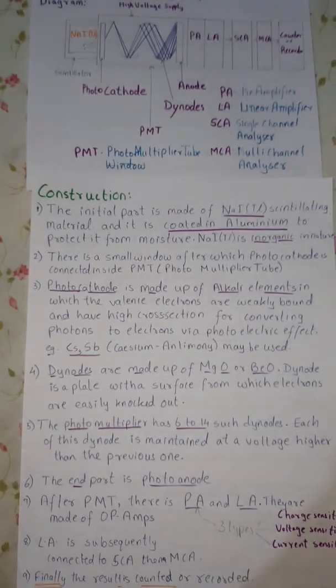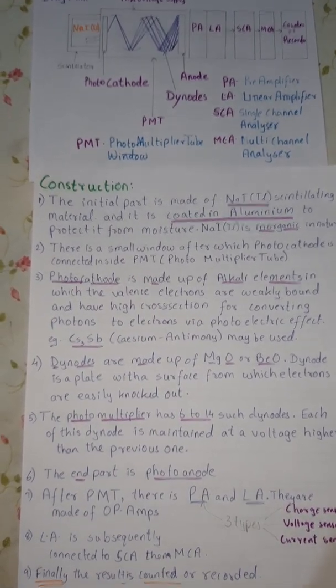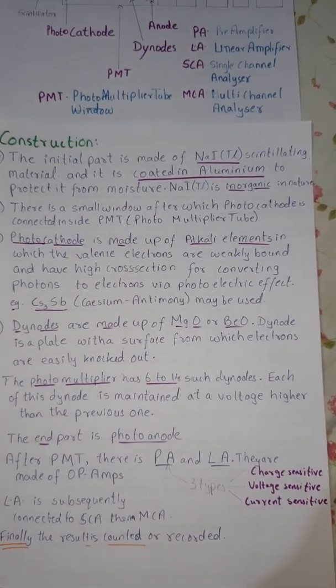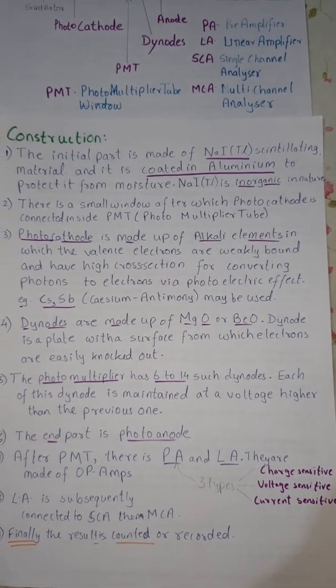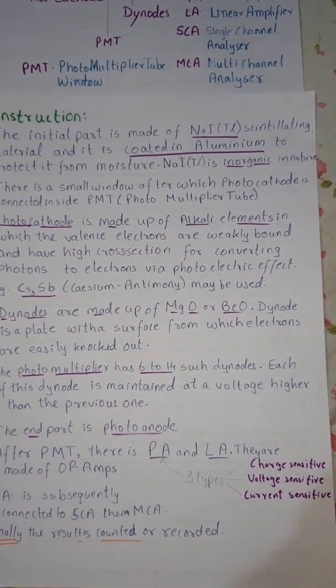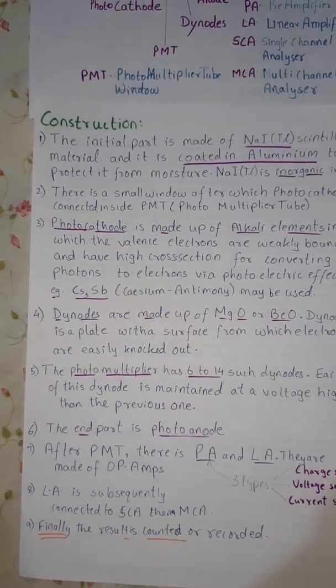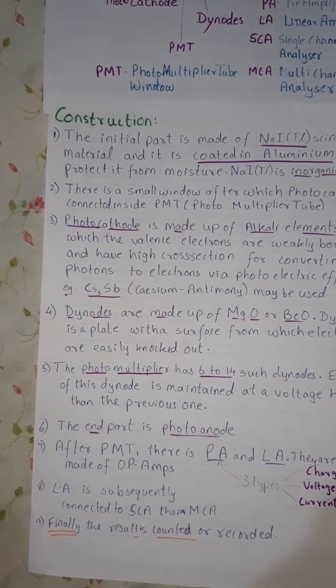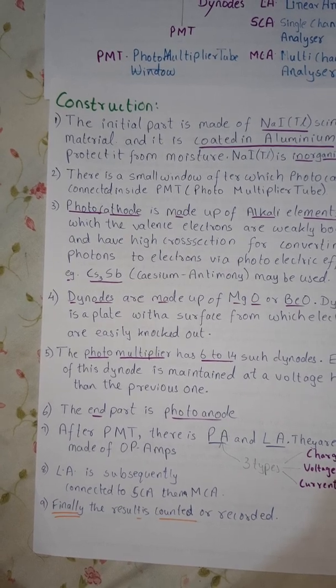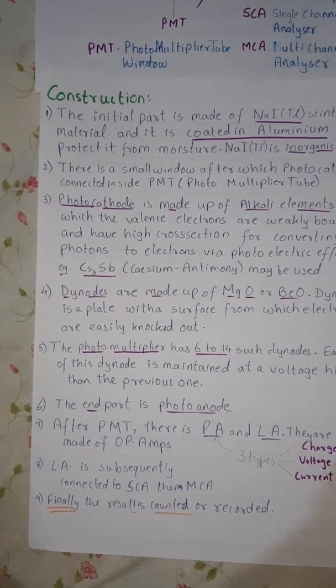The end part is photoanode. Here all the radiations are captured. After PMT there is a PA and LA. For your additional knowledge, there are three types of PA that is charge sensitive, voltage sensitive and current sensitive. These PA and LA which are amplifiers are made up of operational amplifiers. LA is subsequently connected to SCA and then MCA. In the end the result is counted or recorded.